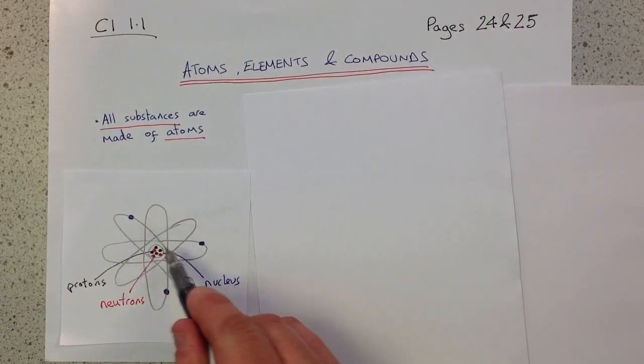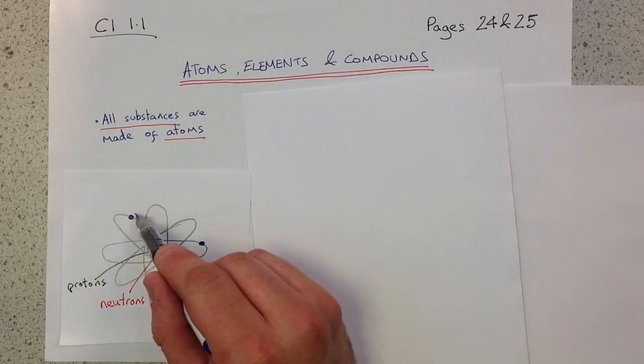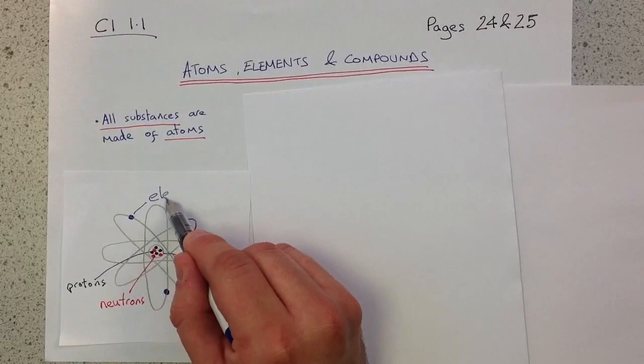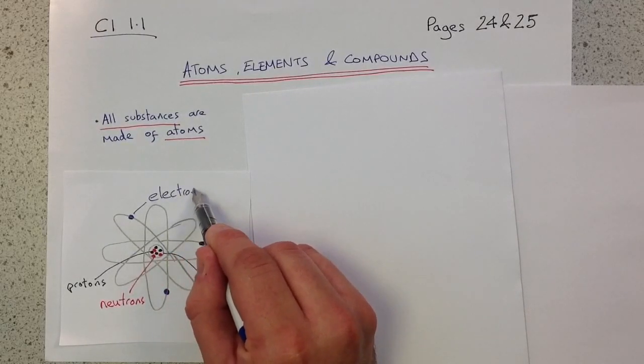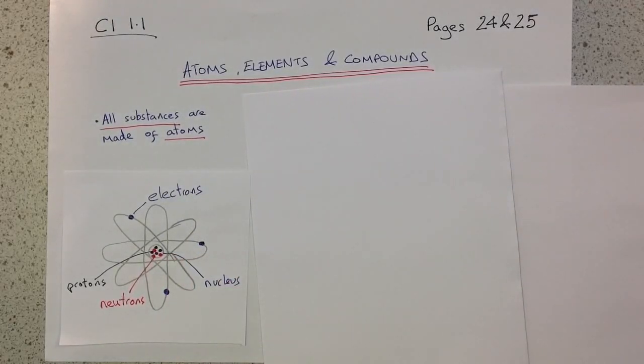These things here, whizzing around and about the outside, these are our electrons. The structure of an atom, shown there.